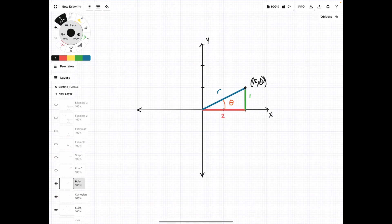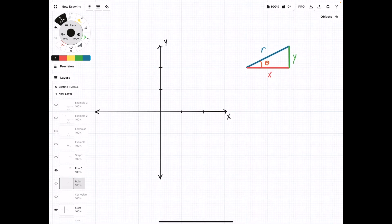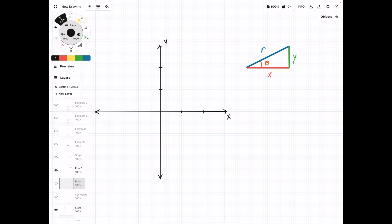When we show both of these coordinate systems, we can see that they form this right triangle. So I'm going to pop that triangle out, hide this, and we're going to use this triangle to figure out what r and theta are in terms of x and y.